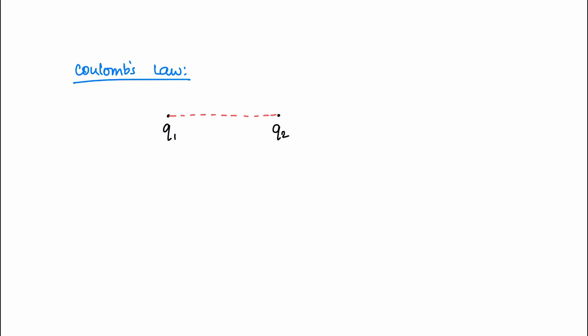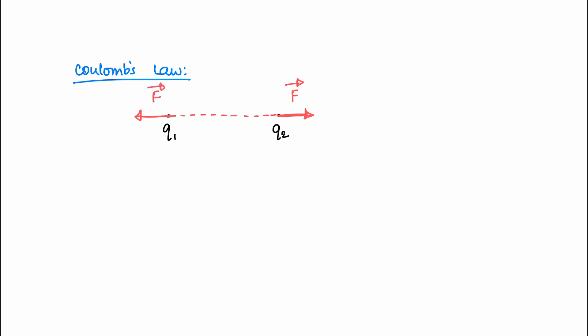Now that we know about the two charges, there is a repulsion force. The repulsion force lies on the line joining these two charges. This force is a vector — it has a magnitude and a direction. There are two vectors: one for each direction between the charges.